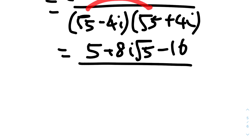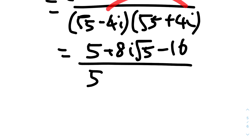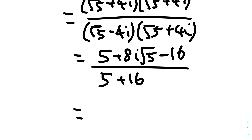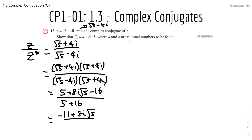The denominator: √5 × √5 = 5. The middle terms (4i√5 and -4i√5) cancel. The last term: -4i × 4i = -16 × (-1) = +16. So the denominator is 5 + 16 = 21. Collecting terms in the numerator: real part is 5 - 16 = -11, imaginary part is 8i√5. So the result is (-11 + 8i√5) / 21.